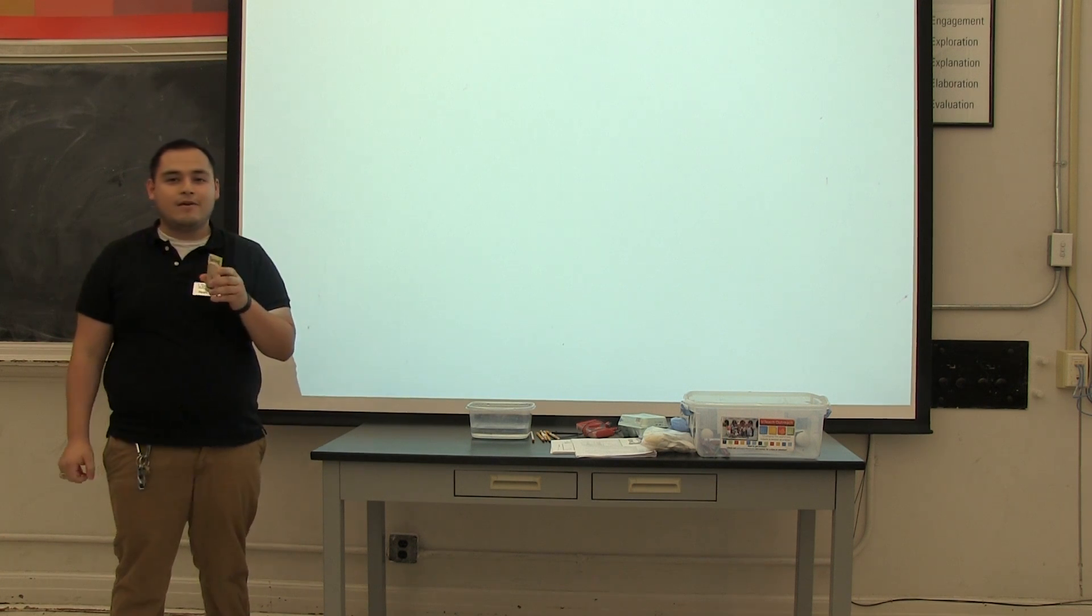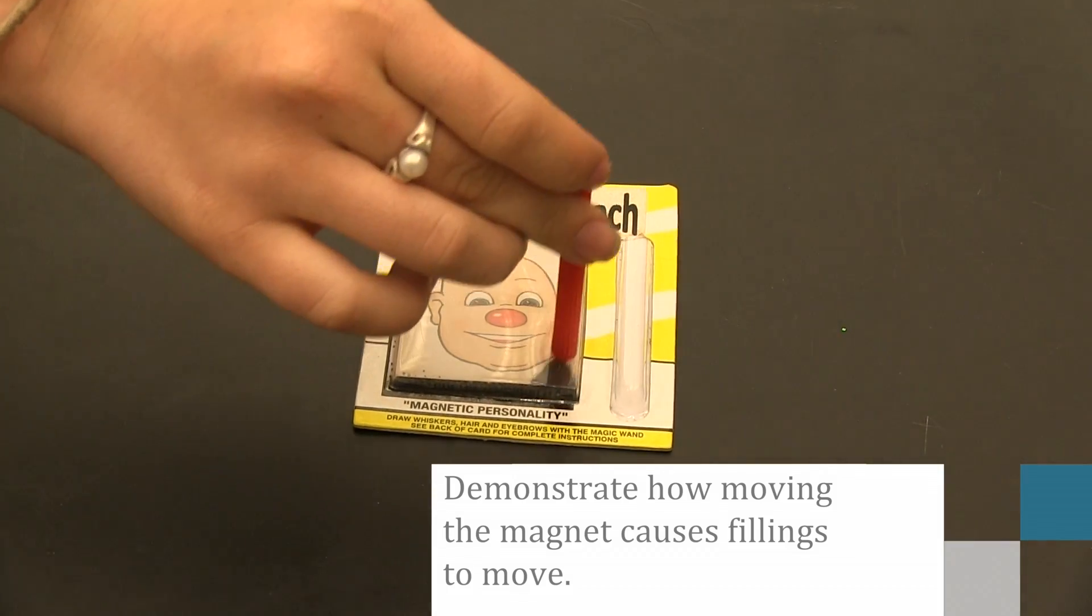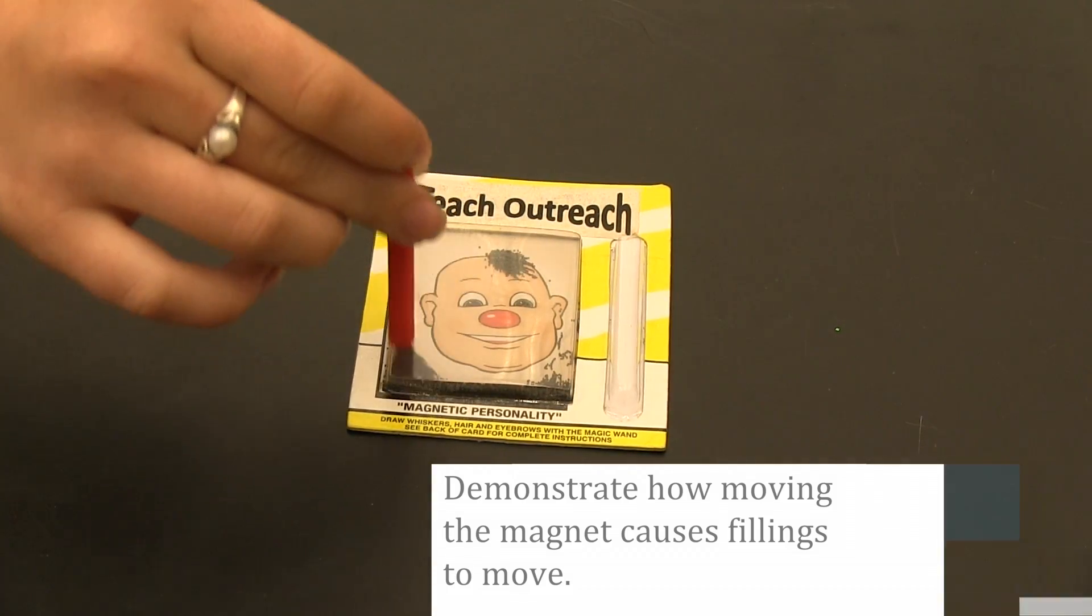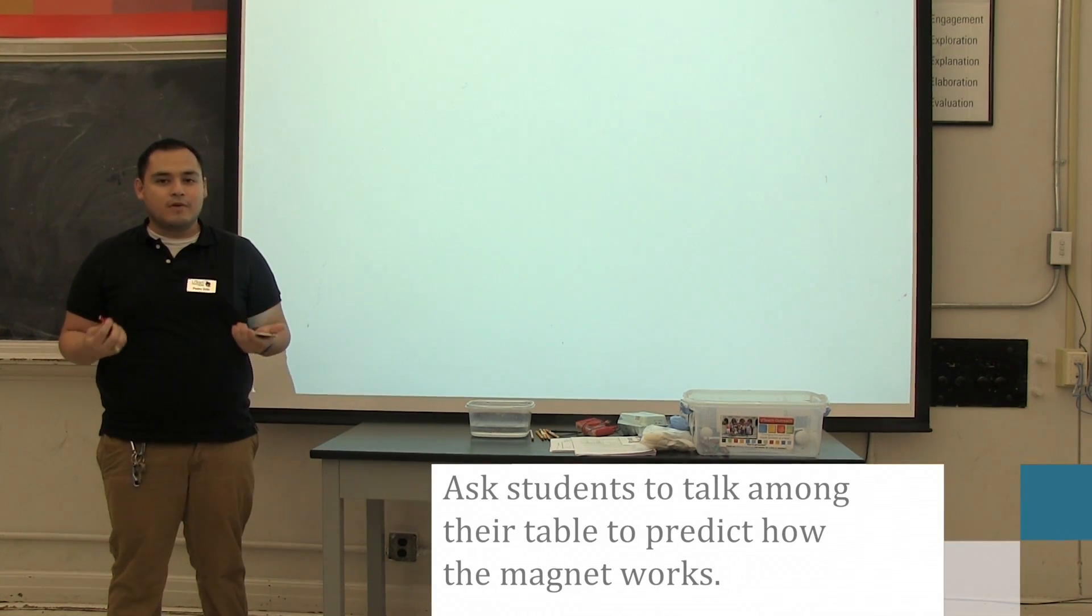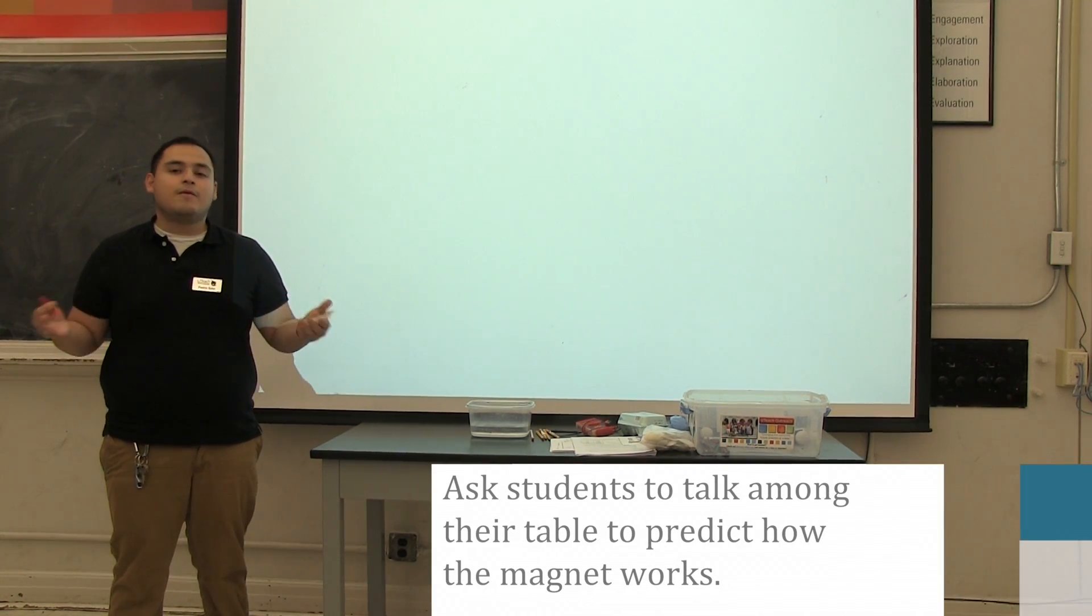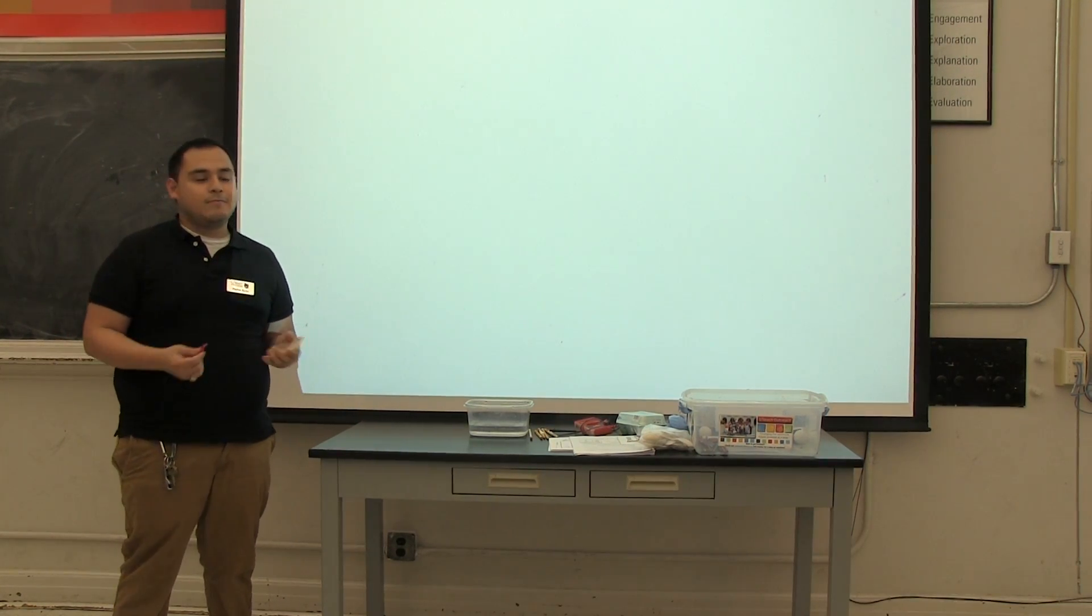But for today, Jack is going to come around and pass out these Willy Willys to each pair. So what I want you to do is play with it, of course, but also make observations. Why is the hair moving? What's going on? Why is the magnet moving these hairs? In a few minutes I want you to discuss with your partner what's going on and the observations you'll make. We'll come back together as a class and discuss all the observations everyone's made.